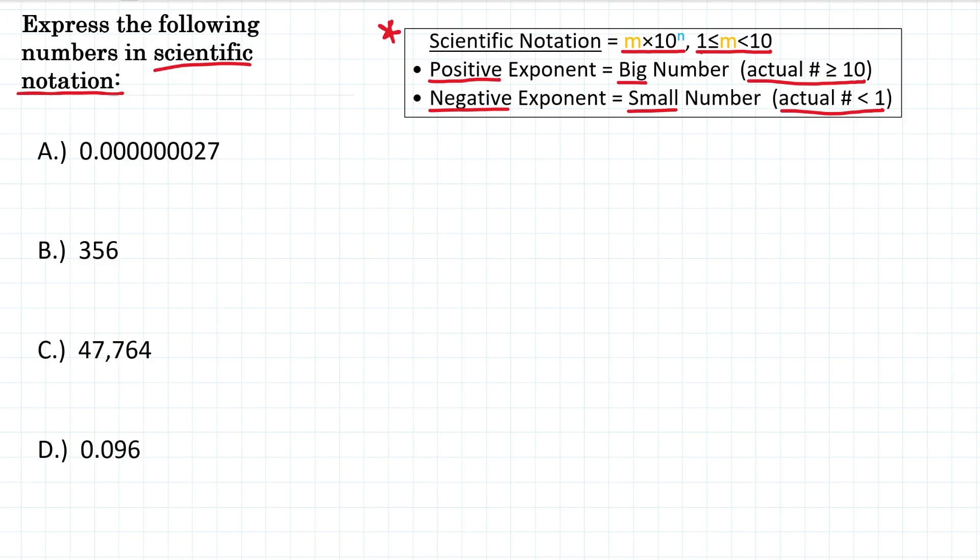Alright, so let's look at A. We have 0.000000027. So that is a small number, a lot smaller than 1. So we're going to have a negative exponent. To write this in scientific notation, we need to move our decimal. And depending on how many times we move the decimal, that is going to determine what our exponent is. Remember, scientific notation is written as m times 10 to the n power. So we move that decimal to get our m value that goes first.